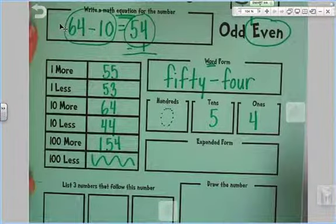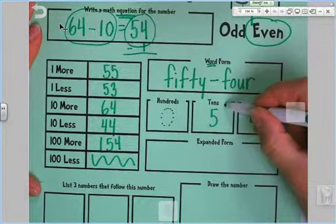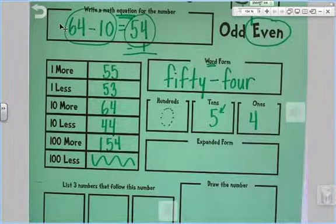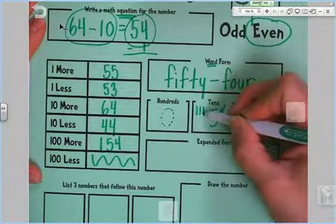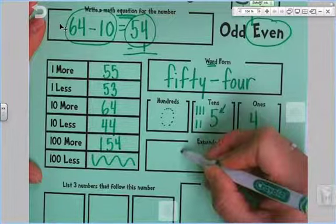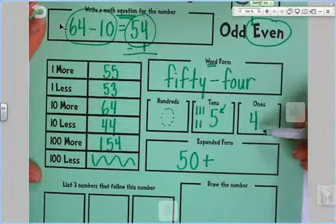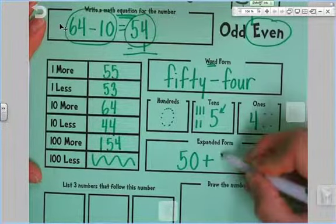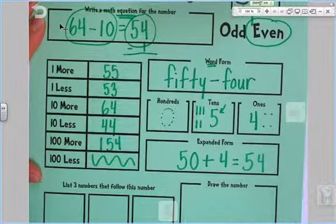Expanded form. Expanded form is asking us to pull this number apart. How? What is the value of this number? It is 5 tens. How much is 5 tens? 10, 20, 30, 40, 50. So 5 tens is worth 50. Plus, how many are 4 ones worth? 1, 2, 3, 4. 50 plus 4 equals 54. Super.